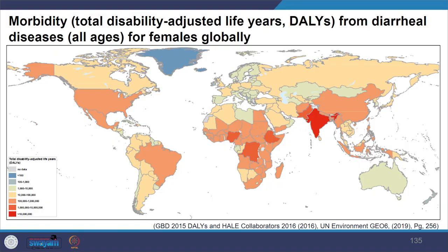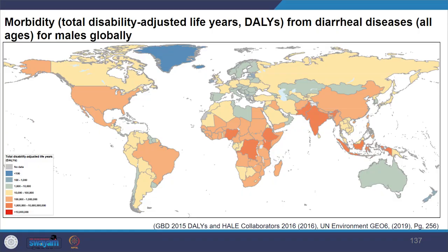Looking at the impact of fresh water problems on human health, they cause gastrointestinal illness. Predicted changes in the hydrological cycle with climate change may increase environment-related diseases. In the image you can see the morbidity from diarrhoeal disease for all ages for females — pay attention to the red colour showing the most severe areas. You can also see the morbidity from diarrhoeal disease for males, and note the colour difference between men and women.